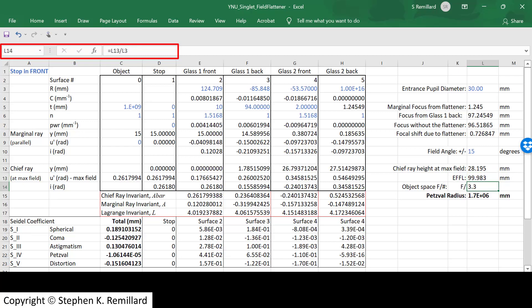And it's a semi-fast lens, not a really fast lens. F number of 3.3. I encourage you to write your own YNU spreadsheet and do your own experiments and add additional lenses and find out for yourself what happens when you make changes to this system.